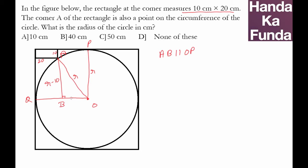Similarly, OB is parallel to the other side and 20 will be reduced from it, so OB will be R minus 20. Since OAB is a right angle triangle, I can apply Pythagoras here: (R minus 10) squared plus (R minus 20) squared is equal to R squared.